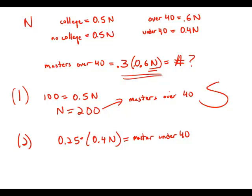And we don't, so there's no way to calculate n, and so there's no way to calculate the number of people with master's degrees over the age of 40 given this information. So this information by itself is insufficient.